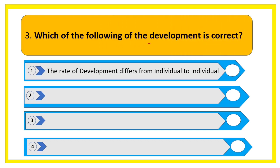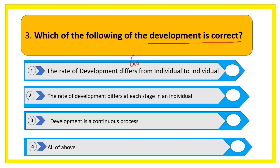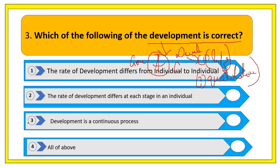The next question asks: which of the following about development is correct? Growth and development are two sides of one coin — they go hand in hand. Development is a lifelong process; it continues throughout life. Development is qualitative, and development cannot be measured. These are the key characteristics: it is continuous, qualitative, and immeasurable.